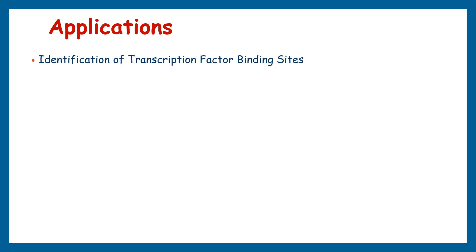Now let's look at the major applications of ChIP sequencing. ChIP sequencing is commonly used to map the binding sites of transcription factors — proteins that regulate gene expression by binding to specific DNA sequences. By identifying transcription factor binding sites across the genome, we can unravel complex gene regulatory networks and understand how different transcription factors cooperate or compete to control gene expression.